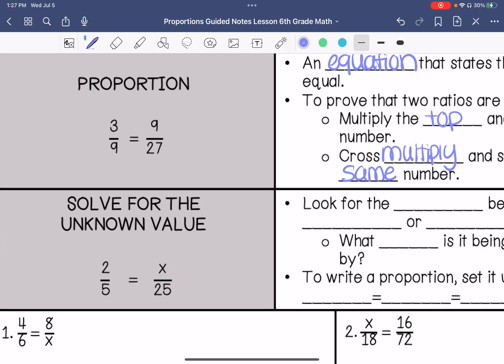So for example, 3 times what is 9? 3 times 3 is 9, so is 9 times 3, 27? Yes, it is. So these are equivalent. They're a true proportion.